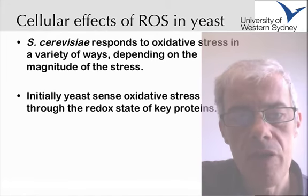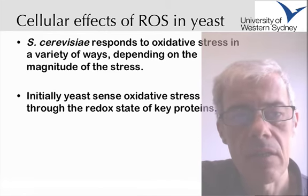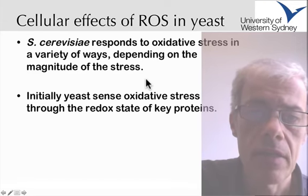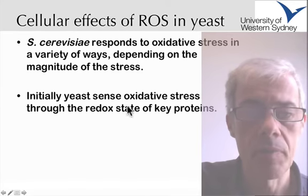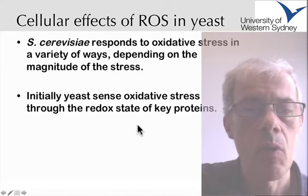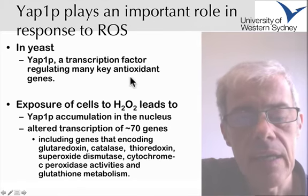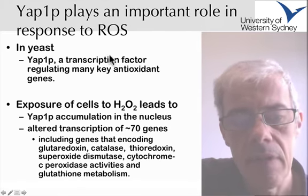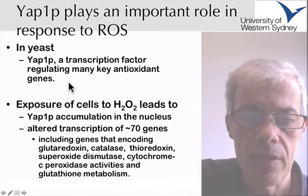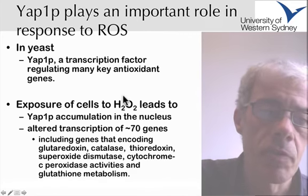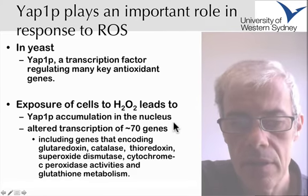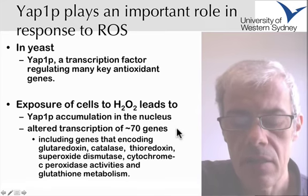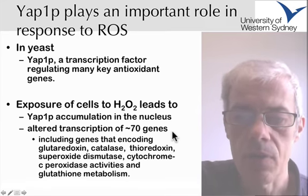A fair bit of research on reactive oxygen species has been carried out in Saccharomyces cerevisiae — Baker's yeast, Budding Yeast — and a range of responses have been observed. One of the more interesting responses is that a transcription factor is activated in response to oxidative stress. Exposure of cells to hydrogen peroxide leads to the accumulation of a transcription factor called GAP1 in the nucleus, where it is able to transcribe genes required for the oxidant defense response.